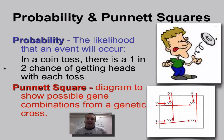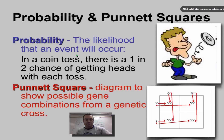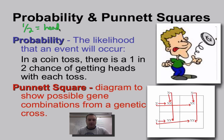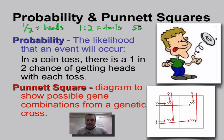Probability is essentially math — we're looking at the likelihood of how a certain event will occur. The answers to probability questions are given in terms of a ratio. When you flip a coin, there's a one out of two chance it'll be heads, and a one out of two chance it could be tails. You can also express these as percents — there's a 50% chance a coin flip will come up heads.